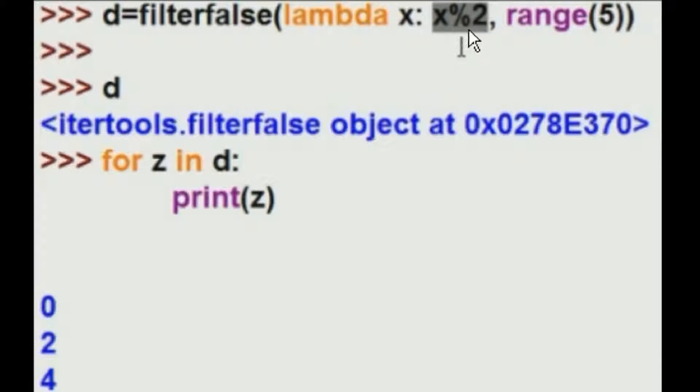And if x mod 2 returns a 0, a false in the range of 0, 1, 2, 3, and 4, then filter that guy out and put them into the variable d. I want to see him. When you iterate through him, I want to see him.